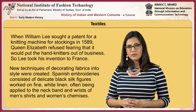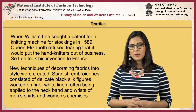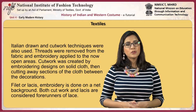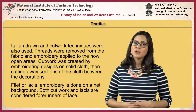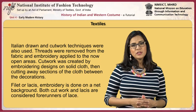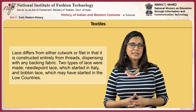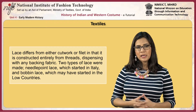New techniques of decorating fabrics were created. Spanish embroideries consisted of delicate black silk figures worked on fine white linen, often applied to the neckband and wrists of men's shirts and women's chemises. Italian drawn and cut work techniques were also used: threads were removed from the fabric and embroidery applied to the now open areas. Cut work was created by working embroidery designs on solid cloth, then cutting away sections of the cloth between the decorations. Fillet or laces: embroidery done on a net background. Both cut work and laces are considered forerunners of lace. Lace differs from either cut work or fillet in that it is constructed entirely from threads, dispensing with any backing fabric. Two types of lace were made: needle point lace, which started in Italy, and bobbin lace, which may have started in the Low Countries.